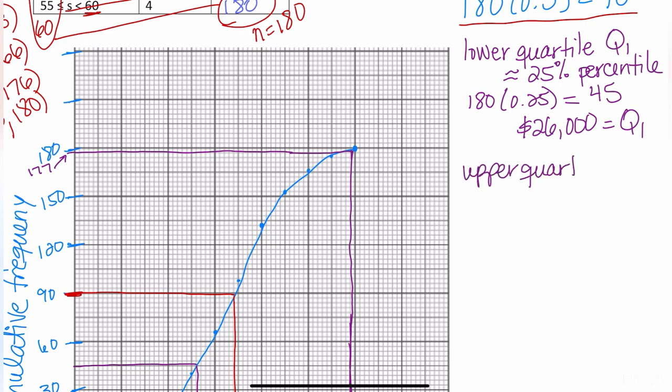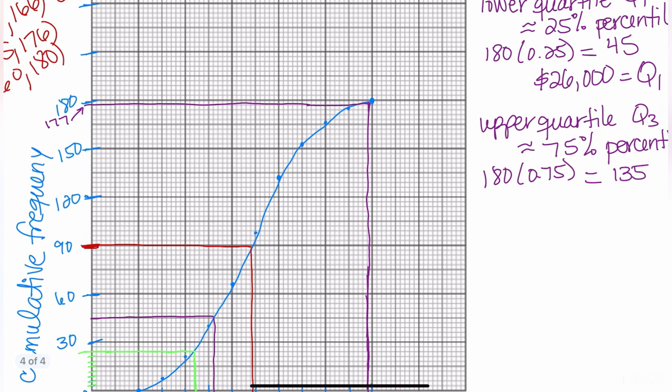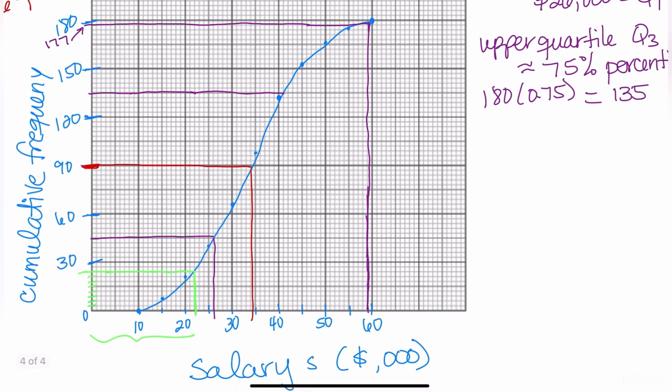To figure out the upper quartile, Q3 is approximately the 75th percentile. We take 180 times 0.75. If I were going in quarters up to 180, it would be 45, 90, 135. So I know I'm going to get 135. I come to my graph and locate 135, right here. I draw a line from the cumulative frequency column as perfectly as possible until you touch the graph. Stop as soon as you touch the graph and come straight down. 41,000 is going to be my upper quartile.